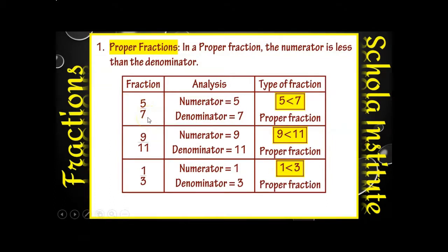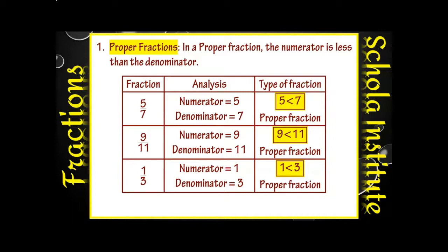First fraction है 5 by 7 — numerator 5, denominator 7। Numerator 5 is smaller than the denominator 7, therefore 5 by 7 is a proper fraction। Second में numerator 9, denominator 11 — 9 is smaller than 11, so 9 by 11 भी proper fraction है। Last है 1 by 3 — numerator 1, denominator 3 — 1 is smaller than 3, therefore 1 by 3 is also a proper fraction।